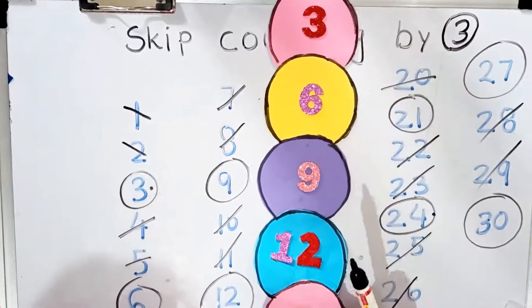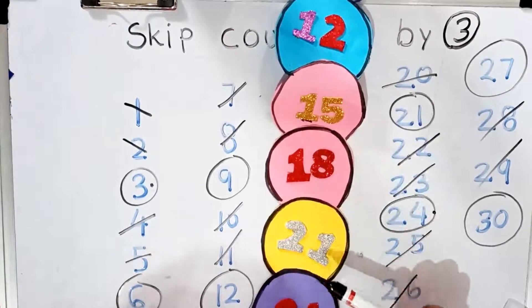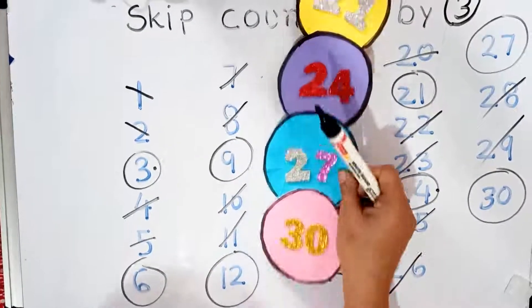3, 6, 9, 12, 15, 18, 21, 24, 27, and 30.